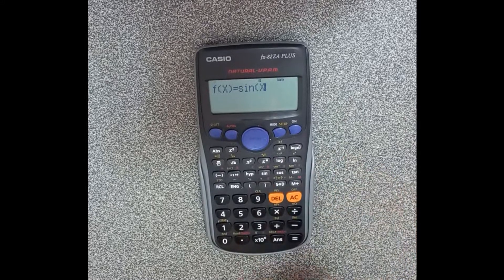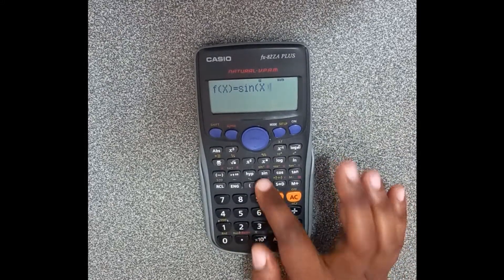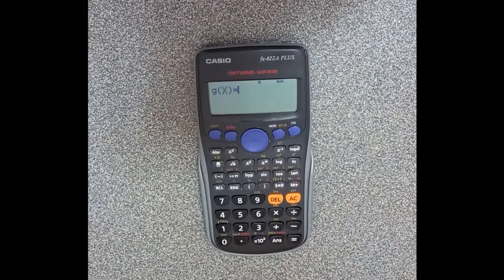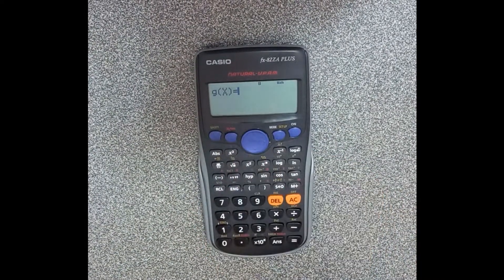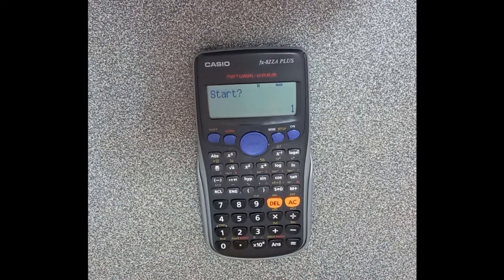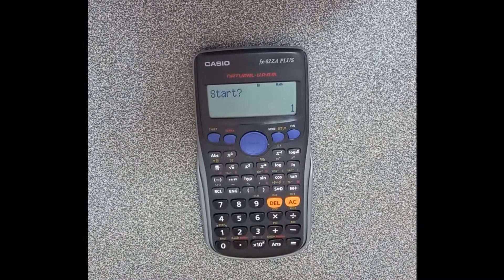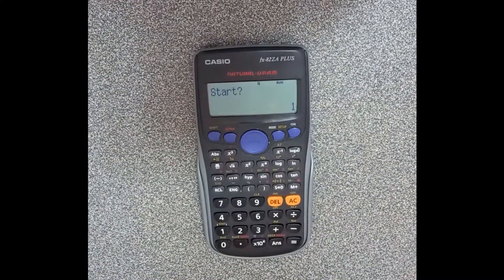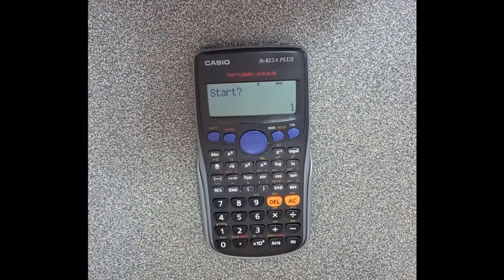Then close your bracket and say equals. It gives you another function but you don't want to do two functions, you only want to do one. So press equals again. When it says start, you're going to look at the interval that they've given you in the question paper.